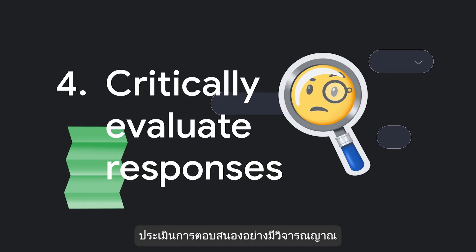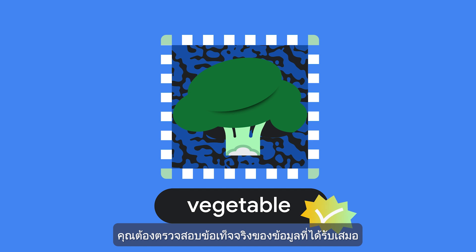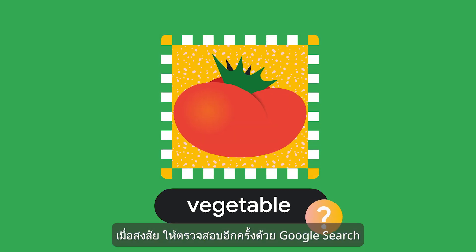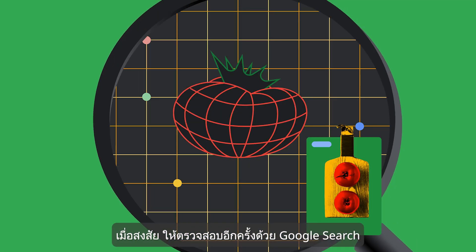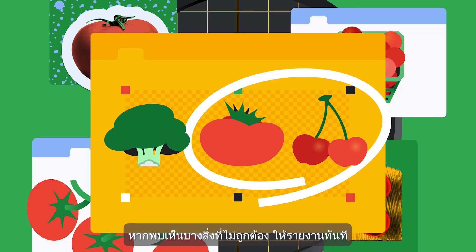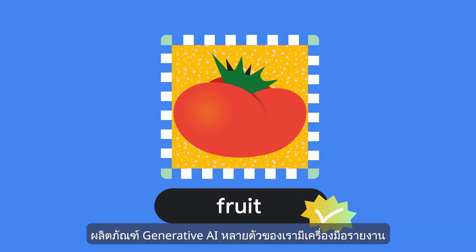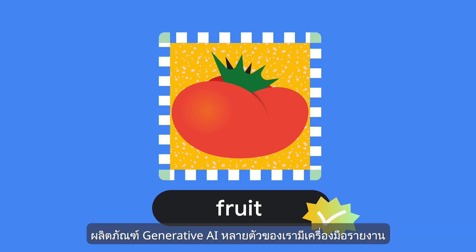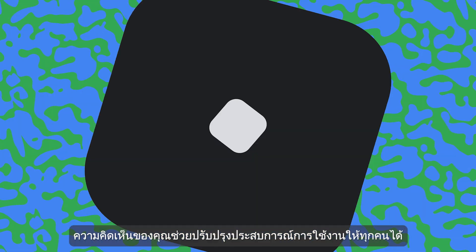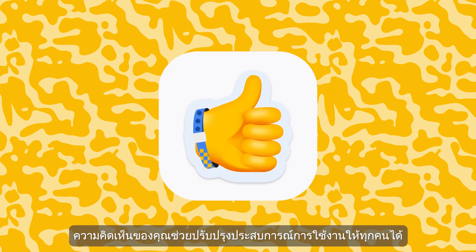Critically evaluate responses. Always check information that's presented as fact. When in doubt, double check it with Google Search. If you see something that's not right, flag it. Many of our Generative AI products have reporting tools. Your feedback helps improve the experience for everyone.